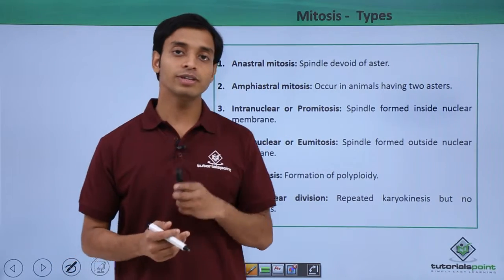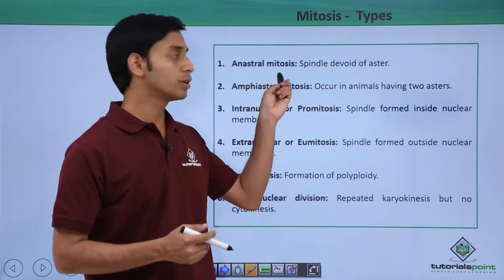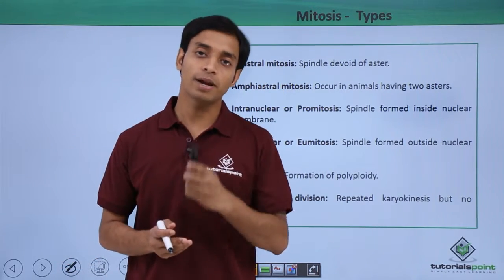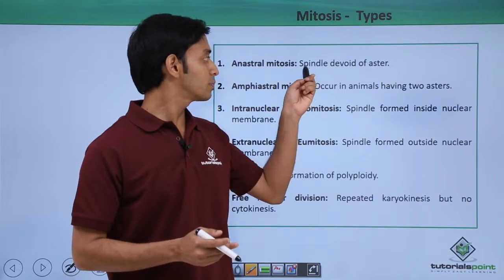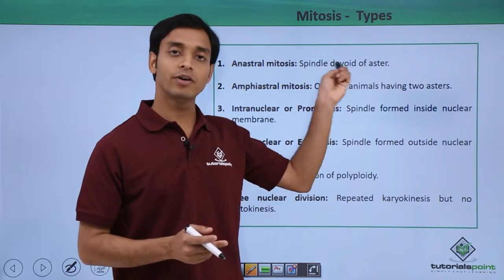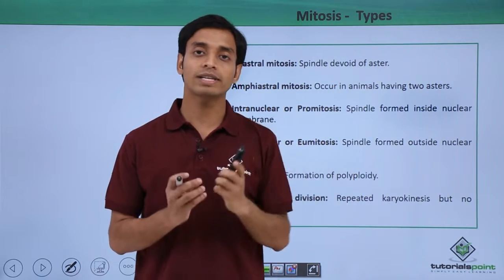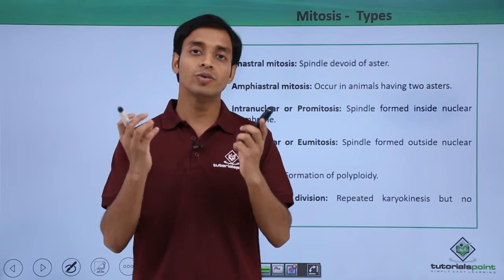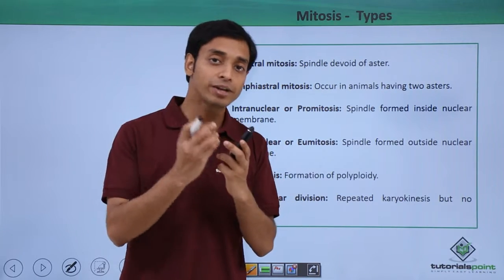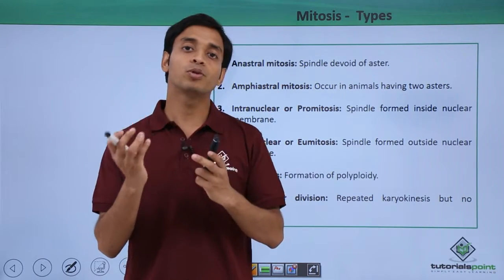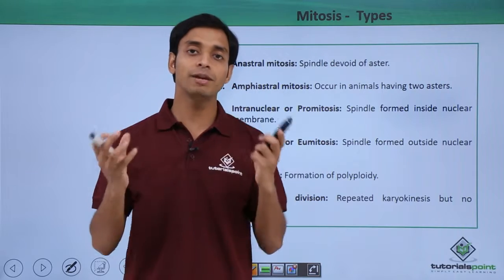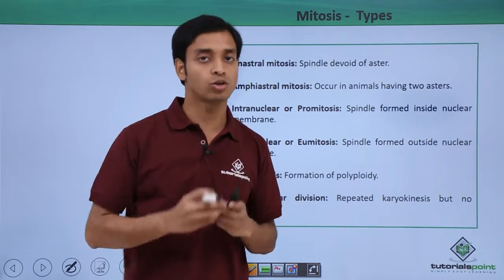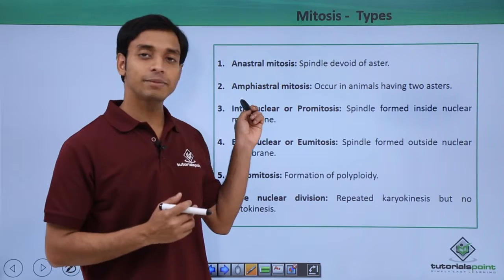The first type is known as anastral mitosis. This happens typically in plant cells. Here the spindles are devoid of asters. Asters are centriole-like structures which produce microtubular protein-like structures that help in the attachment of the centromeres of the chromosomes.